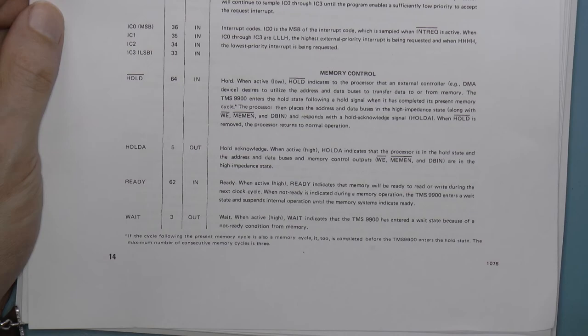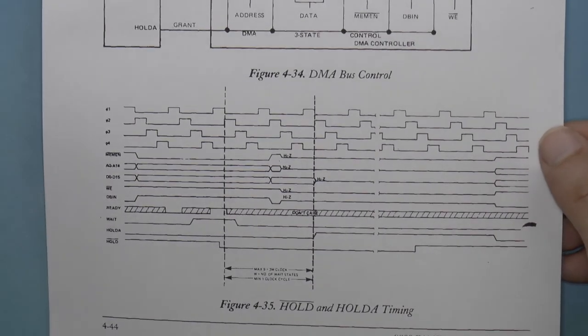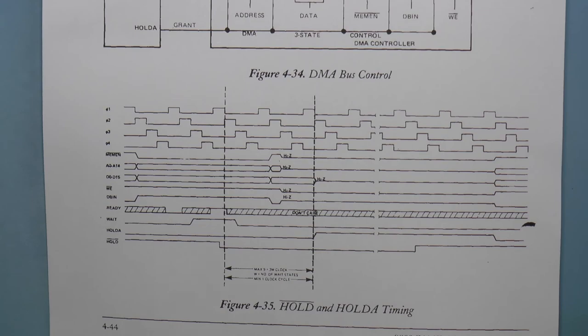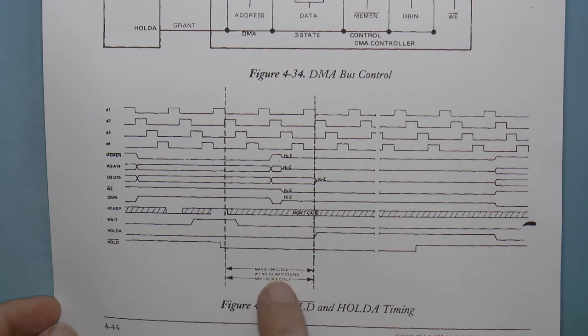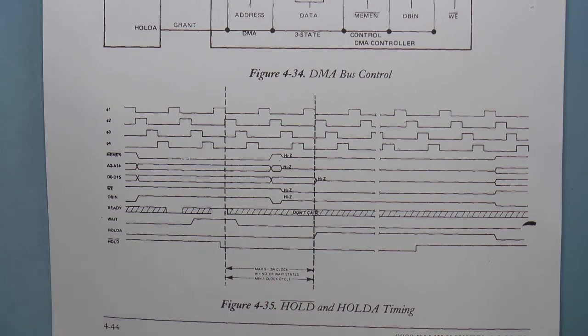And when you unhold, the processor starts up again. Here's a timing diagram of that. We see that the time from hold to hold-acknowledge is between 1 and 9 clock cycles, depending on how many memory reads the current instruction needs to execute.